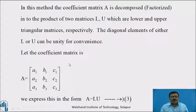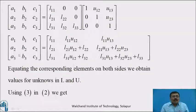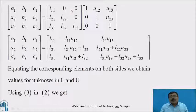Let the coefficient matrix A = [[A1, B1, C1], [A2, B2, C2], [A3, B3, C3]]. We express this as A = LU, call it equation 3, where L is the lower triangular matrix with all above-diagonal elements zero: [[L11, 0, 0], [L21, L22, 0], [L31, L32, L33]], multiplied by the upper triangular matrix U.